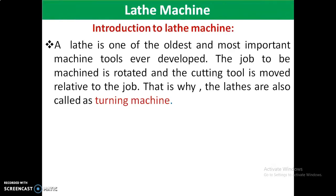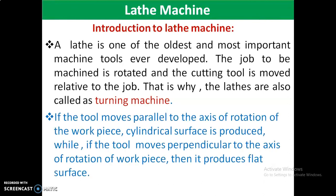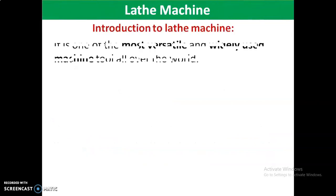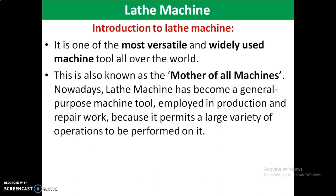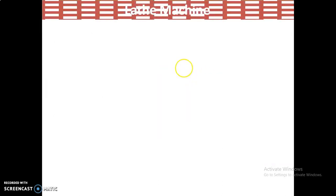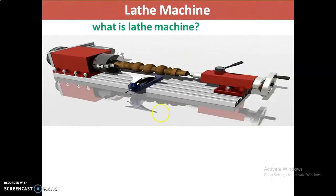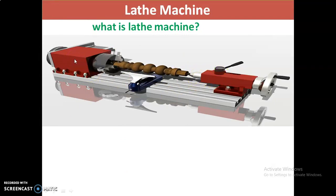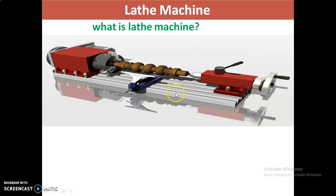Now let us see the definition of the lathe machine. Looking at the diagram, we can identify the live center, dead center, tailstock, headstock, and bed. So how do we define the lathe machine? A machine which is used to remove the unwanted material from the workpiece in the form of chips to get the required shape and size.